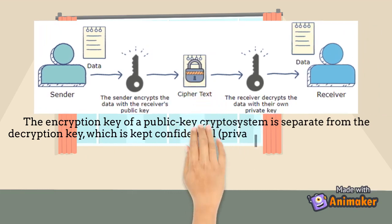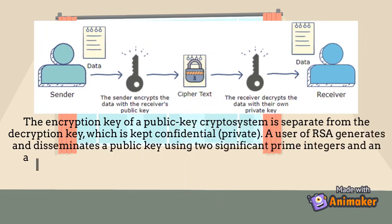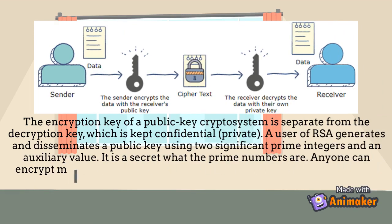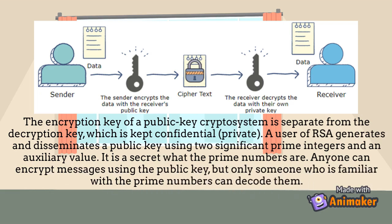The decryption key is kept private. A user of RSA generates and disseminates a public key using two significant prime integers and an auxiliary value. The prime numbers themselves are kept secret. Anyone can encrypt messages using the public key, but only someone who knows the prime numbers can decode them.